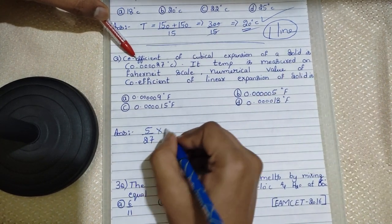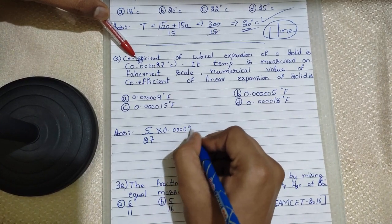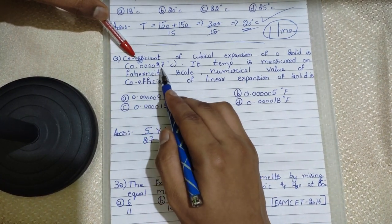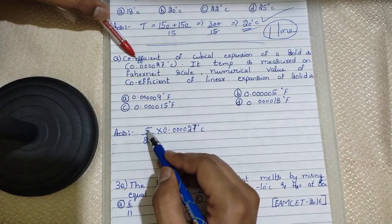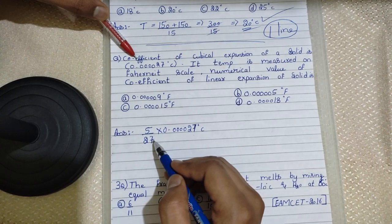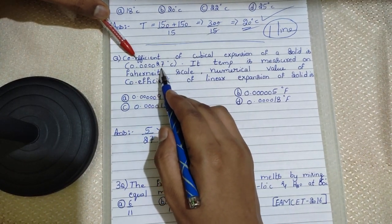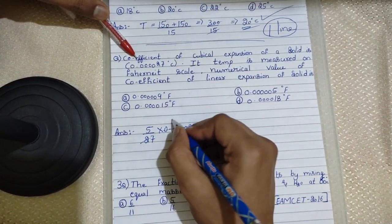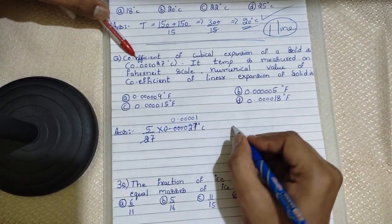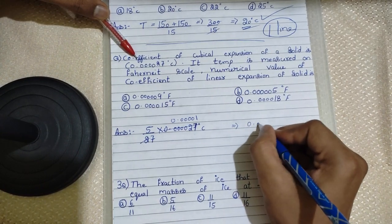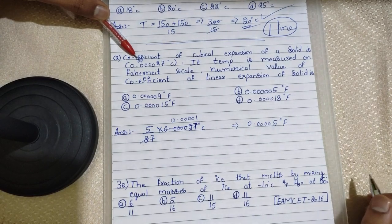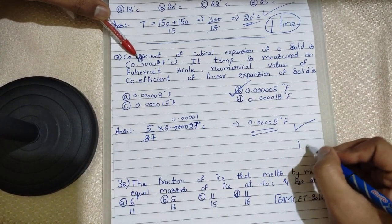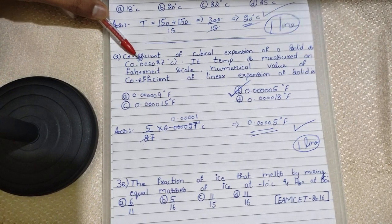Multiply 5/27 with the coefficient of cubical expansion given in the question: 0.00027. Some students may think the 27 in the cheat code comes from the 27 in the problem — no, this cheat code applies to any problem regardless of the number. After dividing, you get 0.00001, and after multiplying you get 0.0005 per degree Fahrenheit. Search which option matches — it's the second option.